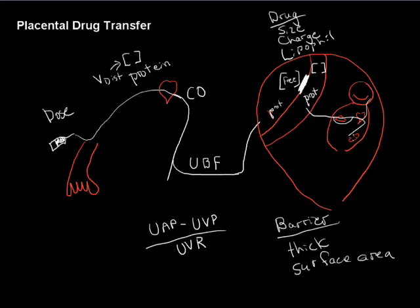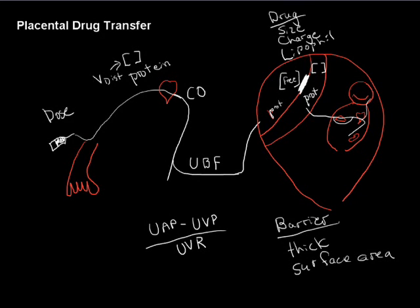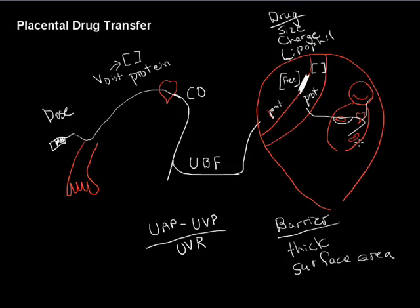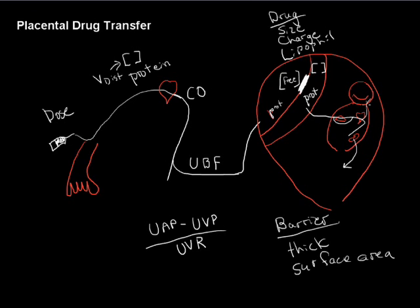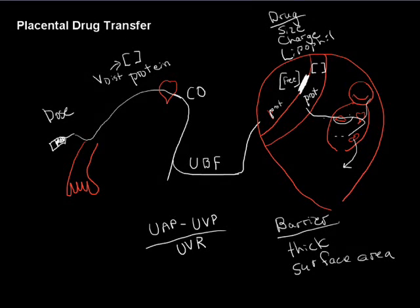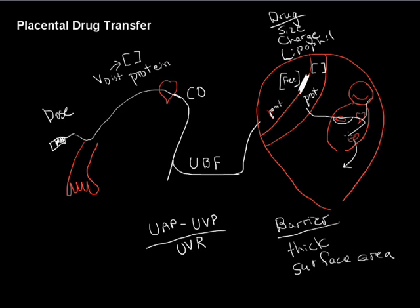And finally, it's going to go by the baby's kidney. And some of it will get excreted into the amniotic fluid where it can get reabsorbed into the umbilical cord or get absorbed. The baby can drink it and have metabolism through the liver that way.